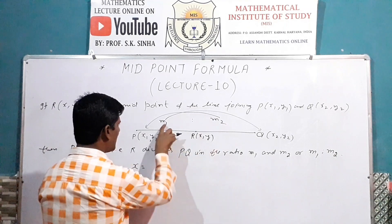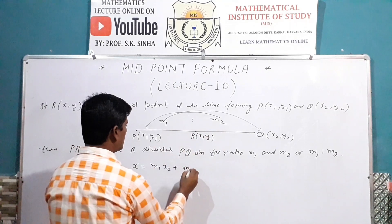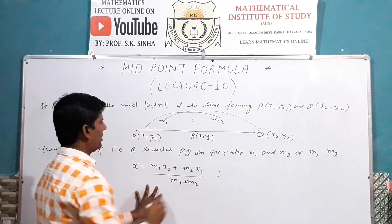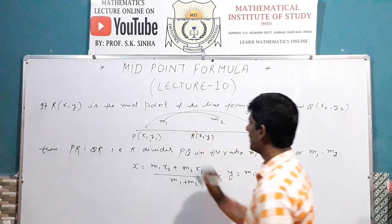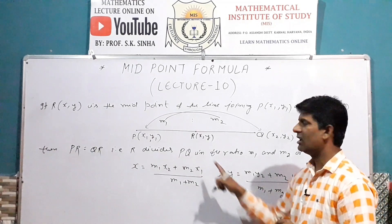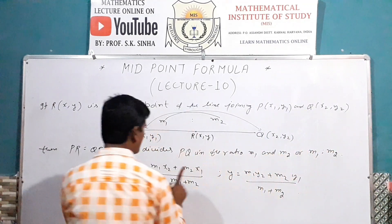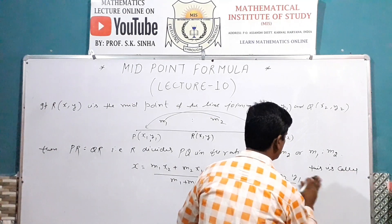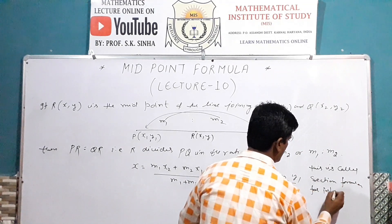Here, x is equal to: M1 multiplied by x2, plus M2 multiplied by x1, divided by M1 plus M2. In the same way, y is equal to: M1 multiplied by y2, plus M2 multiplied by y1, divided by M1 plus M2. These are the coordinates of the midpoint R, and this is called the section formula for internal division.